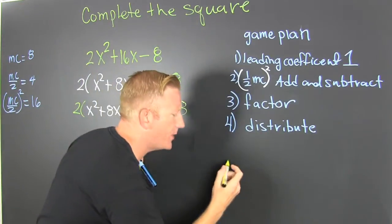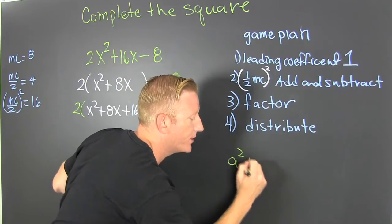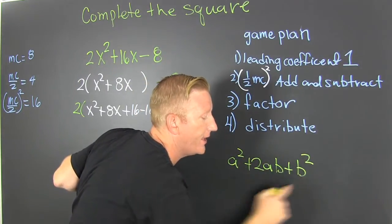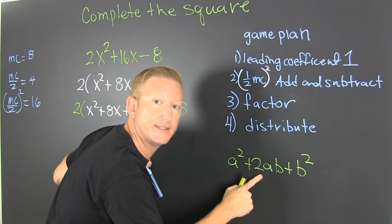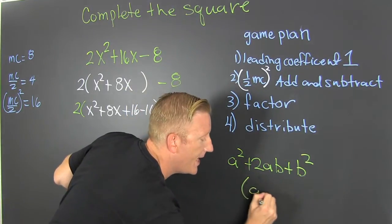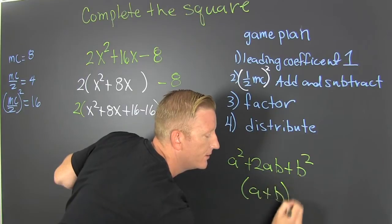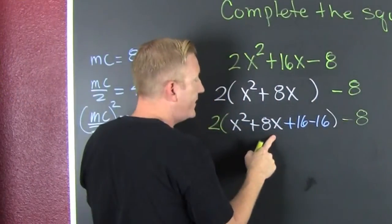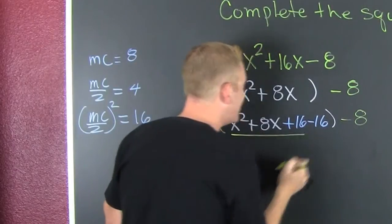Because we're trying to complete that square. What square might you ask? A squared plus 2ab plus b squared. That's a perfect square. Which one? A plus b squared. That's what we've manufactured over here by adding and subtracting that 16.